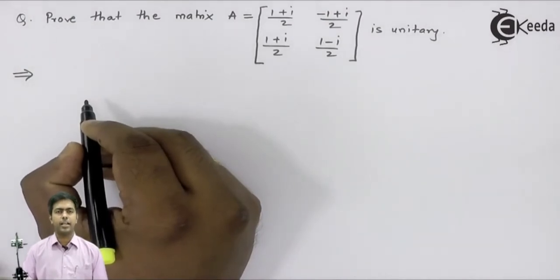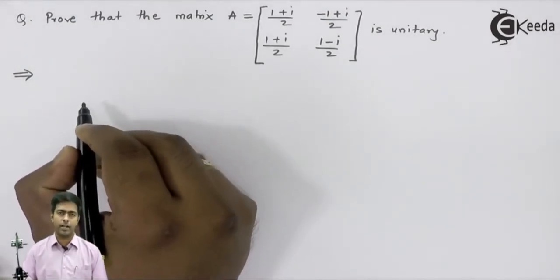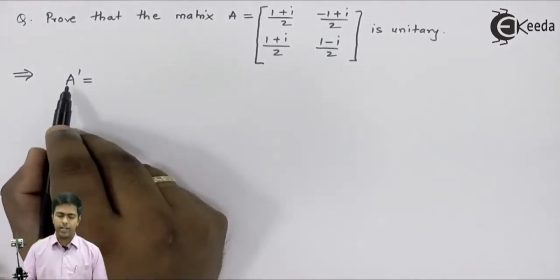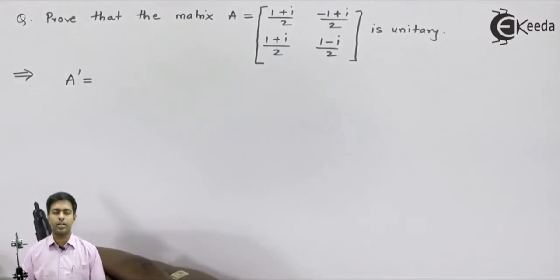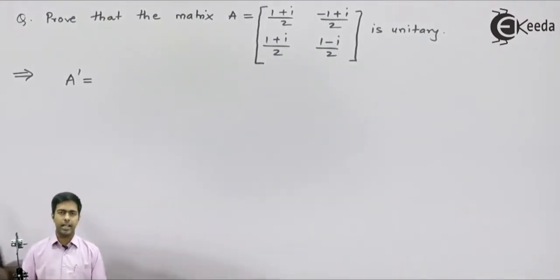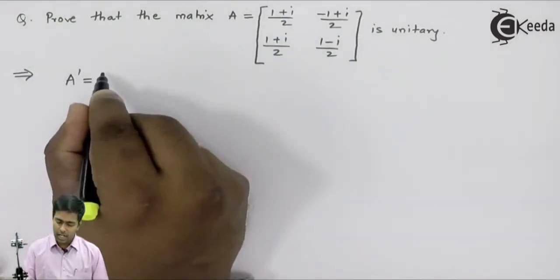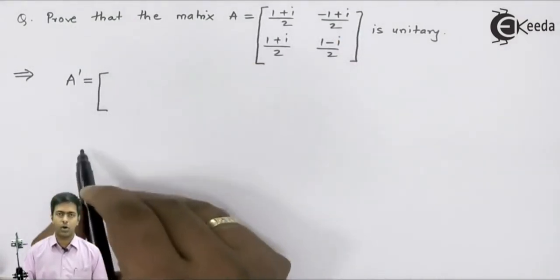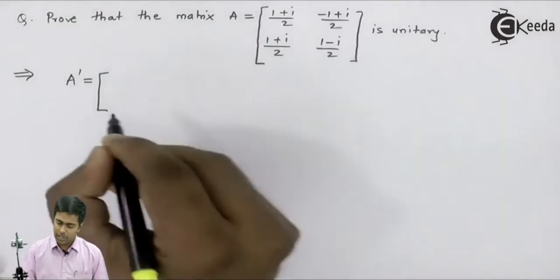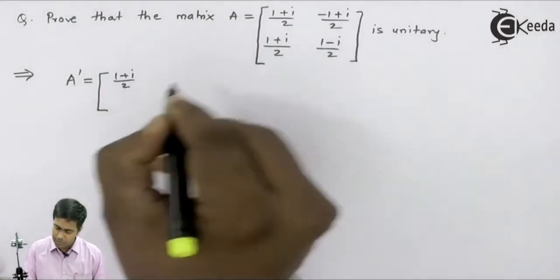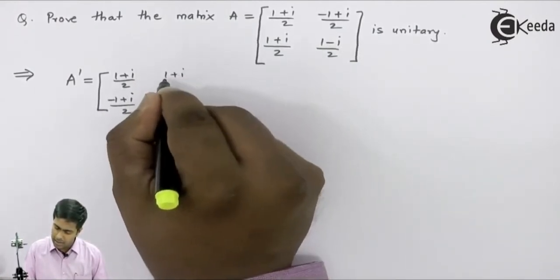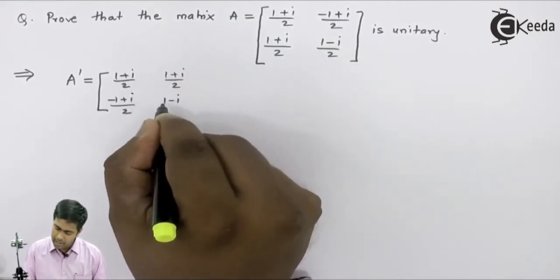To find A-theta, that is the transpose conjugate of the matrix, I will first find the transpose of the given matrix. The transpose is obtained by making the first row the first column and the second row the second column. So it is equal to (1+i)/2 and (-1+i)/2 in the first column, then (1+i)/2 and (1-i)/2 in the second column.